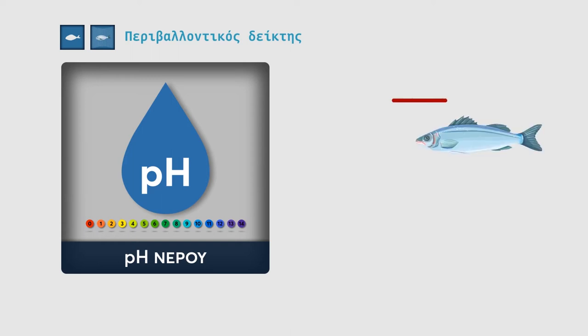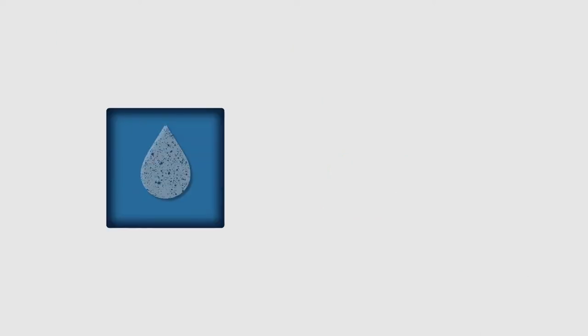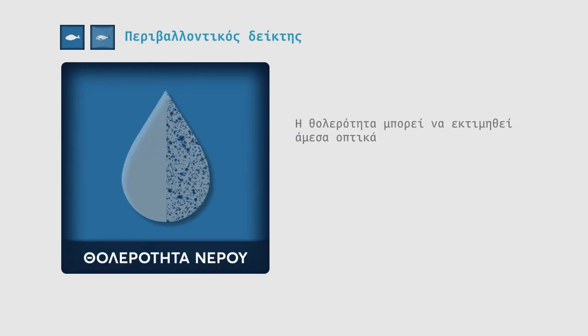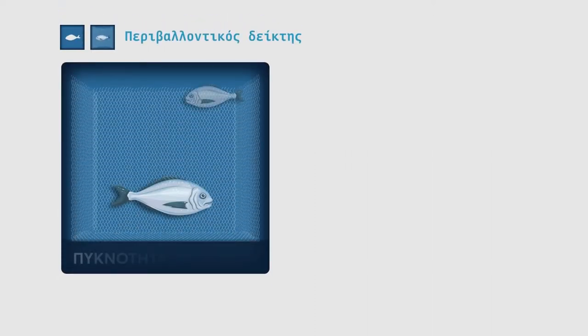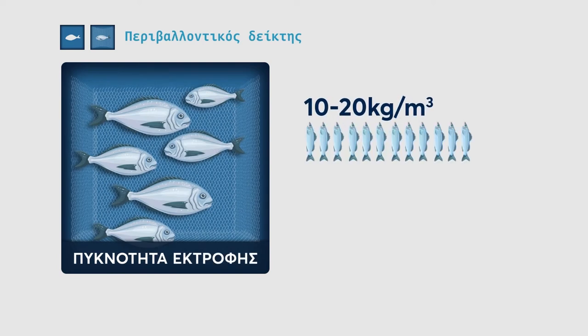For both species, gilt-head sea bream and European sea bass, pH values below 6.5 and above 8.5 are very poor living conditions. Turbidity of the water may give an early indication of degraded water quality of breeding water. Breeding density indirectly affects welfare and therefore must be evaluated together with other indicators.